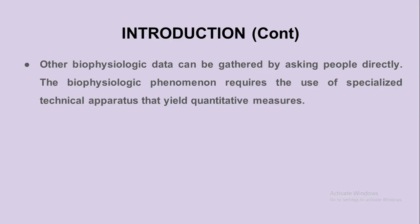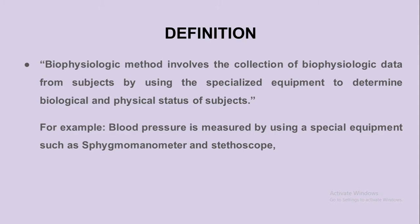With this method we gather data by asking directly to the subjects or by collecting samples from the subjects, which are then studied in the laboratory. We gather the required information in either qualitative or quantitative measures. The definition: the biophysiological method involves the collection of biophysiological data from subjects by using specialized equipment to determine the biological and physical status of subjects. For example, blood pressure is measured with the help of a stethoscope and sphygmomanometer.